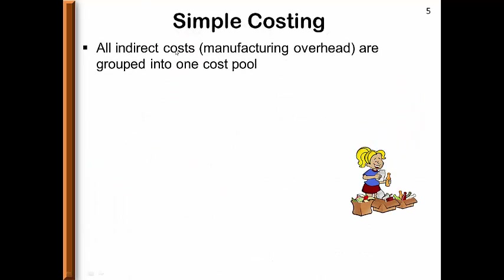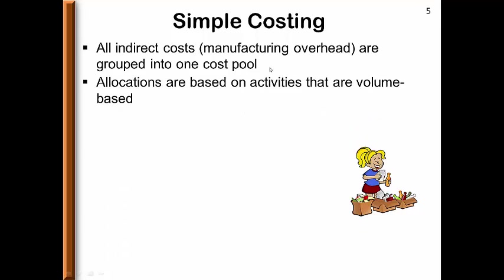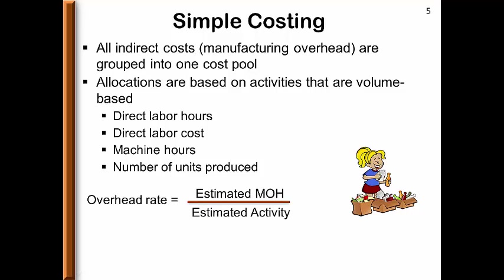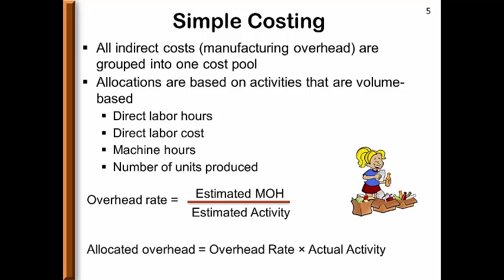With simple costing, we group all the indirect costs of production — known as manufacturing overhead — into one cost pool. The allocations are based on volume-based activities, typically direct labor hours, direct labor cost, machine hours, and number of units produced. A company determines a predetermined overhead rate, sometimes labeled as POHR. The numerator has estimated overhead and the denominator the estimated activity. Activities are often known as drivers. When we apply overhead, we take this rate and multiply it by the actual activity.